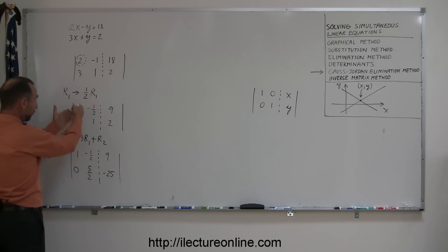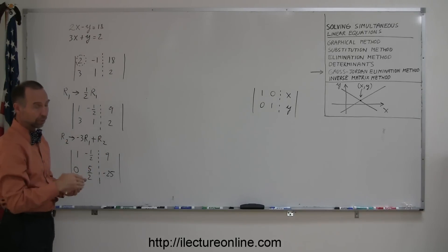But since I did it to the first one, I need to do it to the second and the third number as well. So I take negative 3 times the number in the first row, negative 3 times a half is a positive 3 halves, plus 1 is a positive 5 halves, and I put it there. For the third number, it's negative 3 times a 9, which is a negative 27, add it to 2, negative 27 plus 2 is a negative 25, and I'm done.